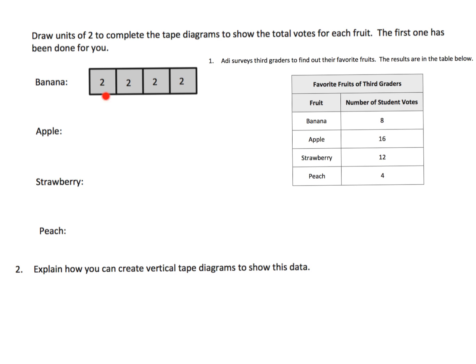Over here you can see we want to draw units of two to complete the tape diagram. So that means each box, each unit is going to represent two students. So we had eight students who liked bananas. So we've got two, four, six, eight.